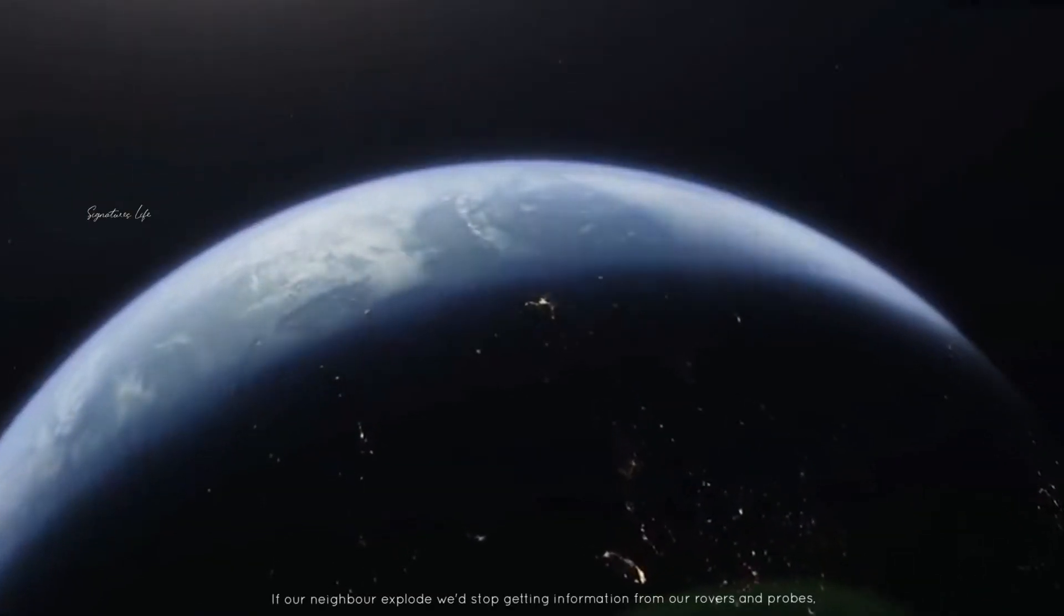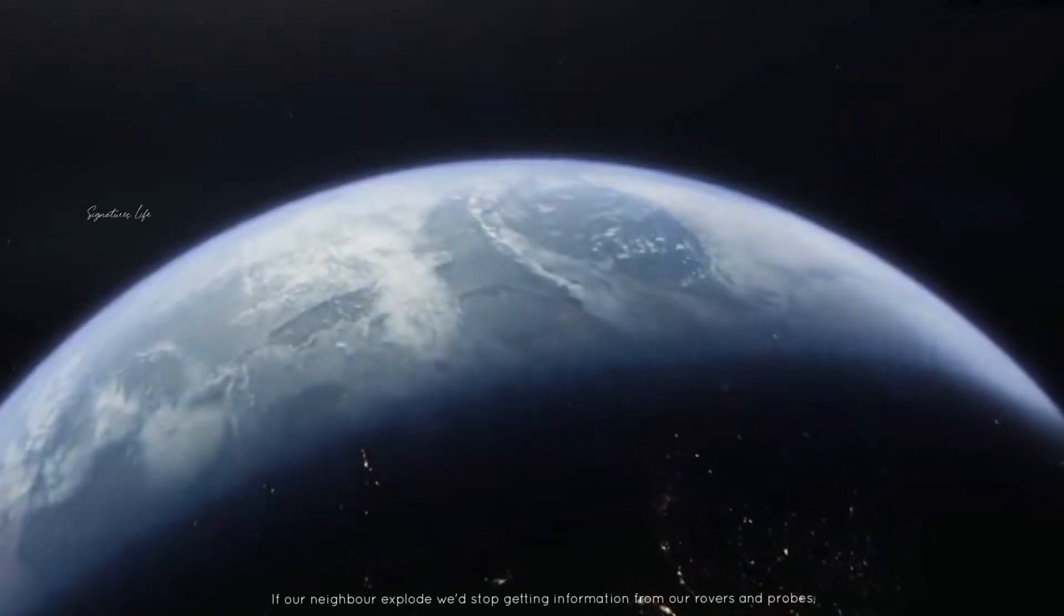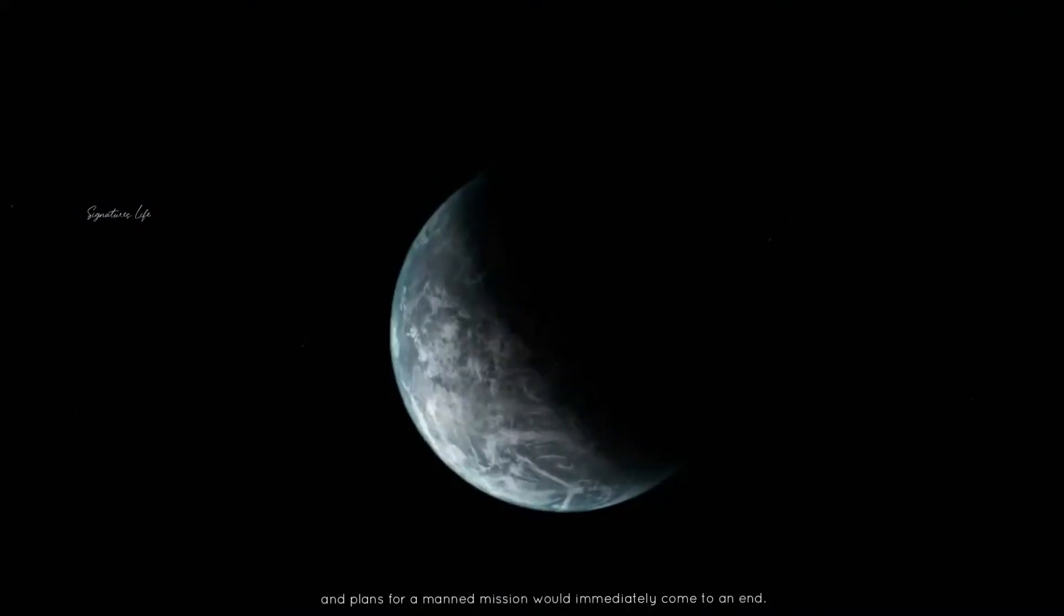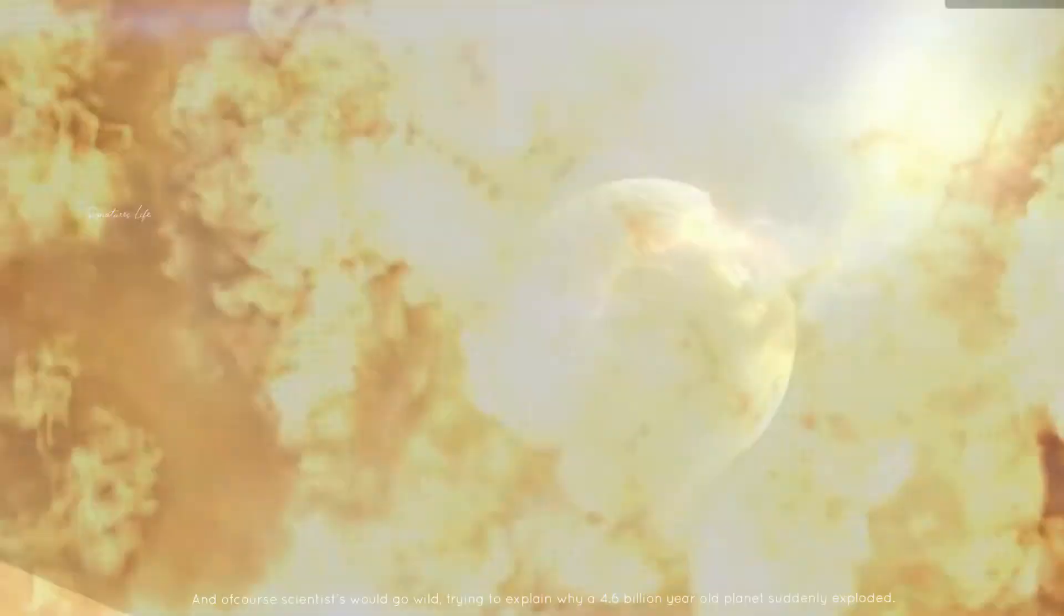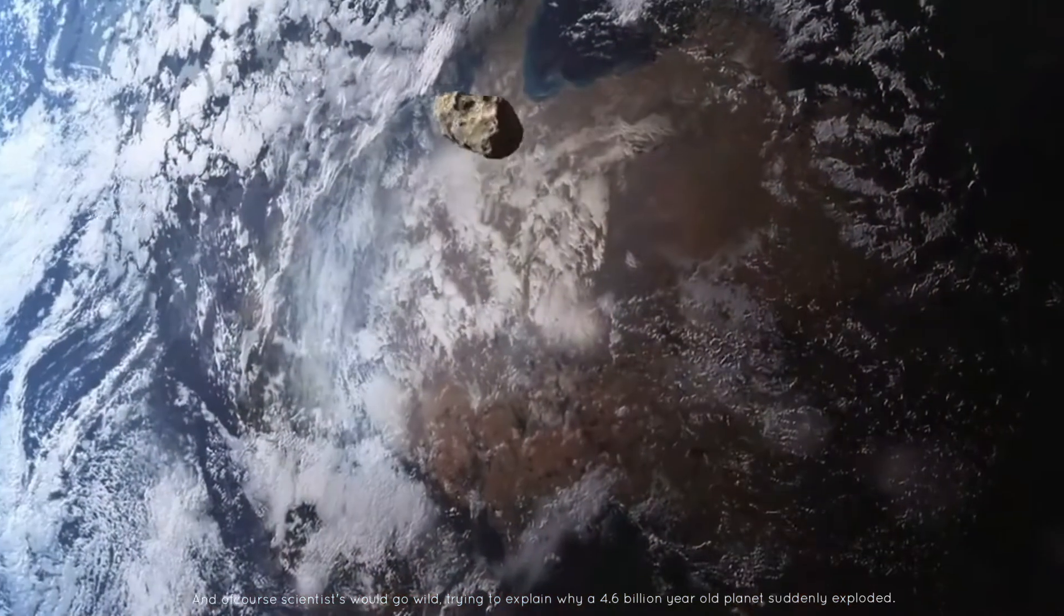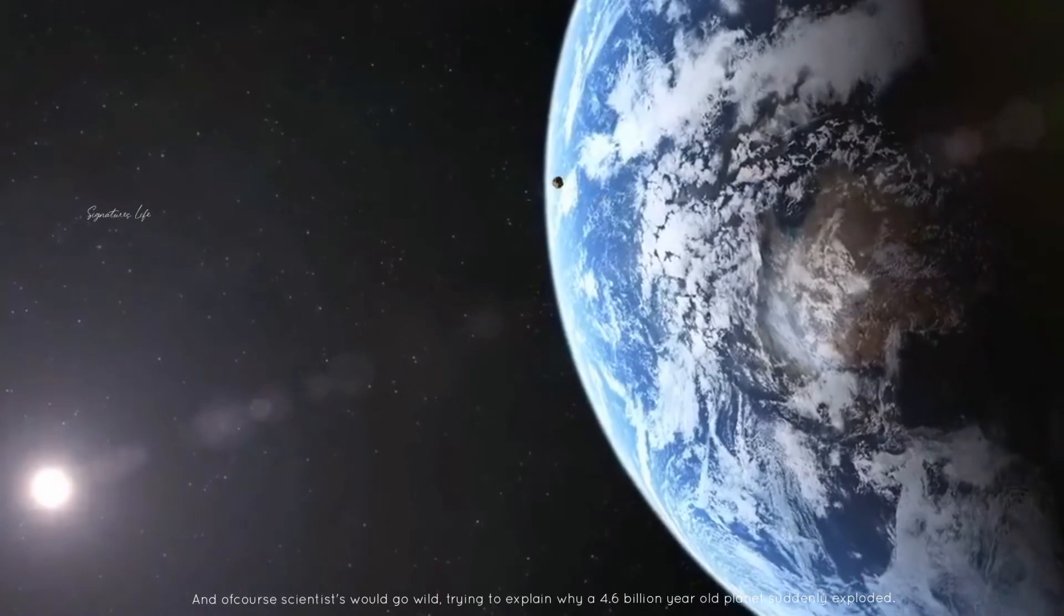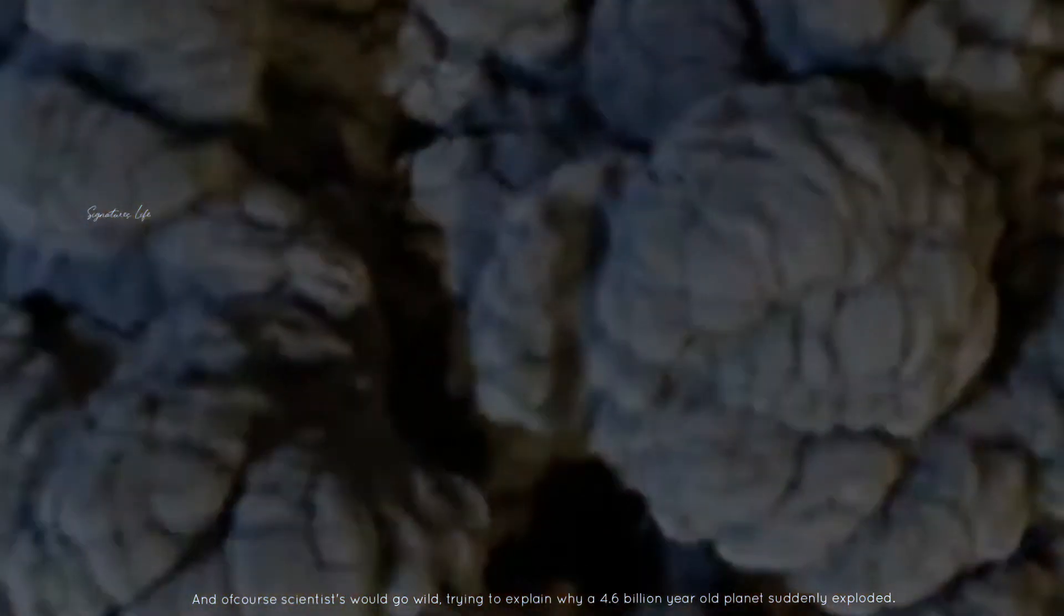If our neighbor exploded, we would stop getting information from our rovers and probes, and plans for a manned mission would immediately come to an end. And of course, scientists would go wild trying to explain why a 4.6 billion-year-old planet suddenly exploded.